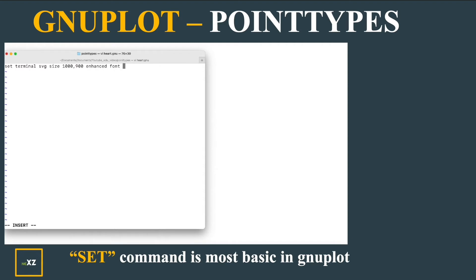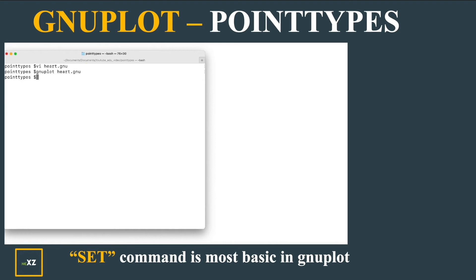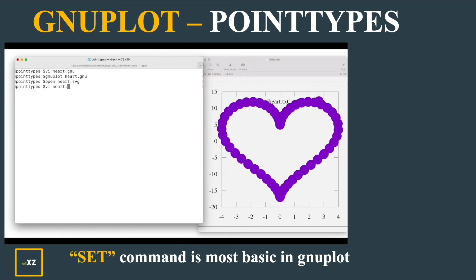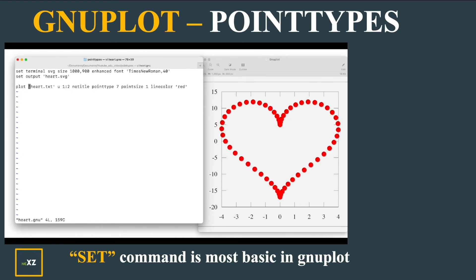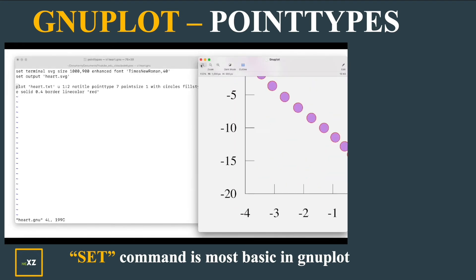Instead of giving a solid fill style to get a transparent or opaque point type, I can do a pattern filling inside my circle. I do a test plot here — this is solid fill. I give no title to remove the title and give a line color red. This is how it looks. Now I use Width Circles, Fill Style, Solid 0.4, Border as I did before. You can see a semi-transparent point type, and that looks good.